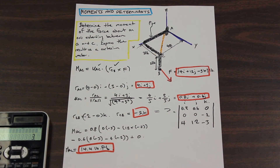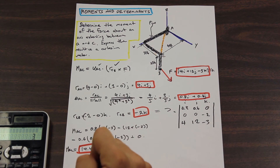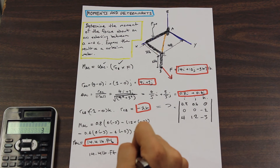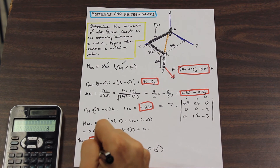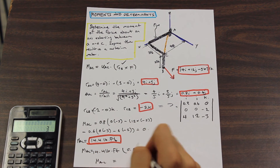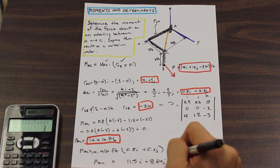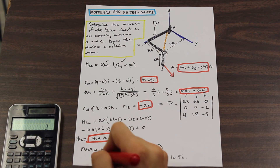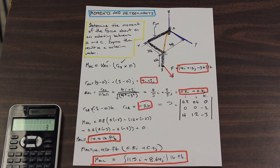However, we're not done yet — we need to express the result as a Cartesian vector. That's pretty simple: take the magnitude of the moment and multiply it by the unit vector of AC. So we have 14.4 pound-feet times the unit vector of AC, which equals 0.8i plus 0.6j. The Cartesian vector of M_AC gives us the moment exerted by this force on axis AC expressed as a Cartesian vector.